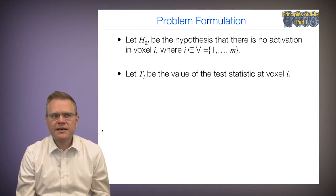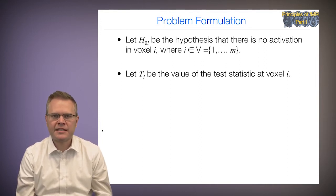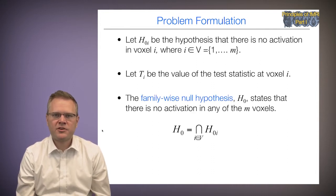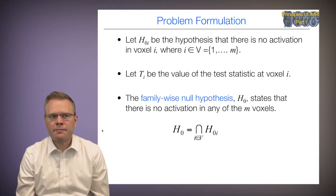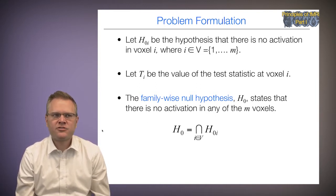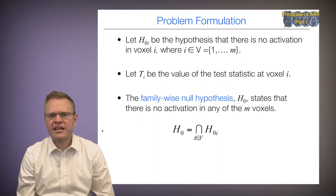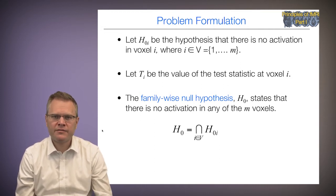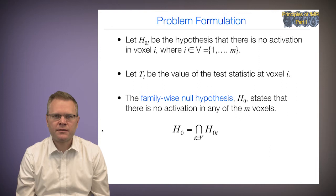Let T(i) be the test statistic at voxel i. We've conducted a test of the null hypothesis at each voxel, and those values make up our statistical map. The family-wise null hypothesis H0 states that there's no activation in any of the M voxels — basically, we're assuming there's no activation anywhere across the brain.